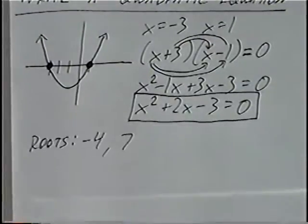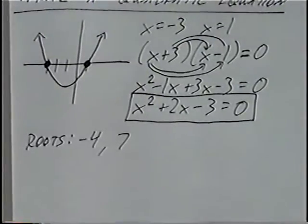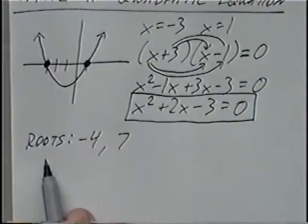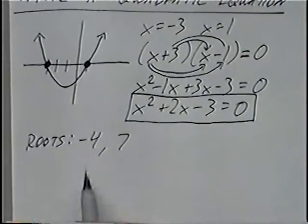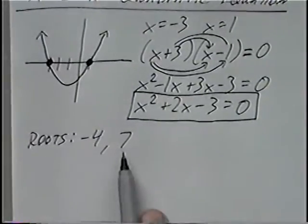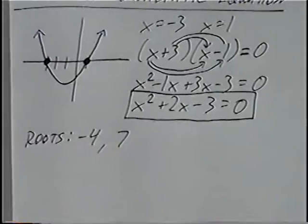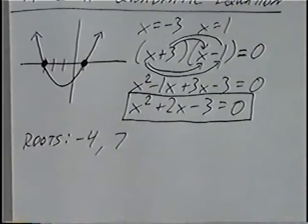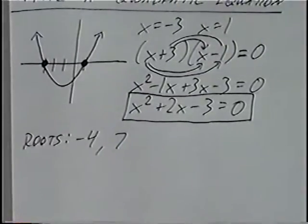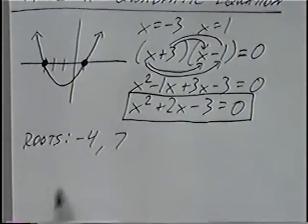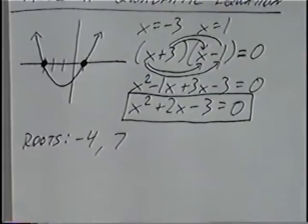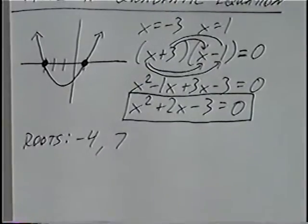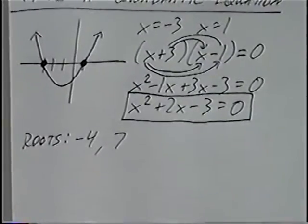For the second and last question of the section, we're given the roots to the quadratic equation. One root is negative 4 and the second root is negative 7. The roots are the same as the values where it crosses the x-axis, or the solutions to the quadratic equation.